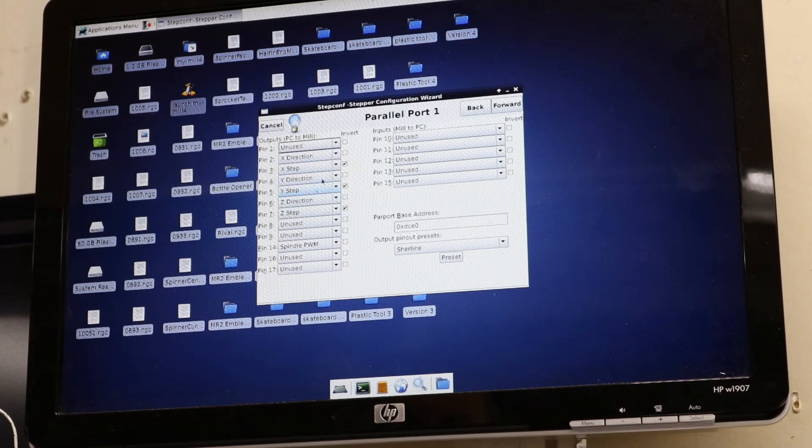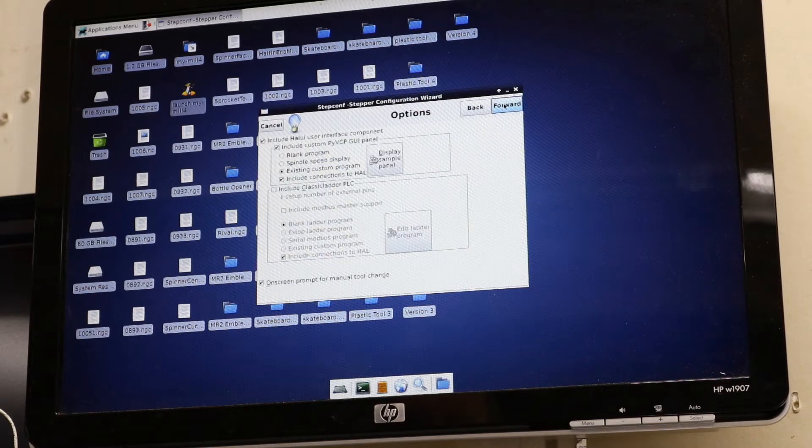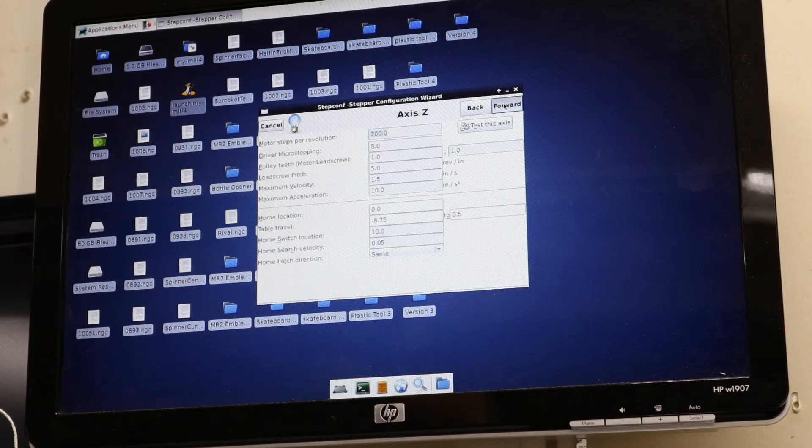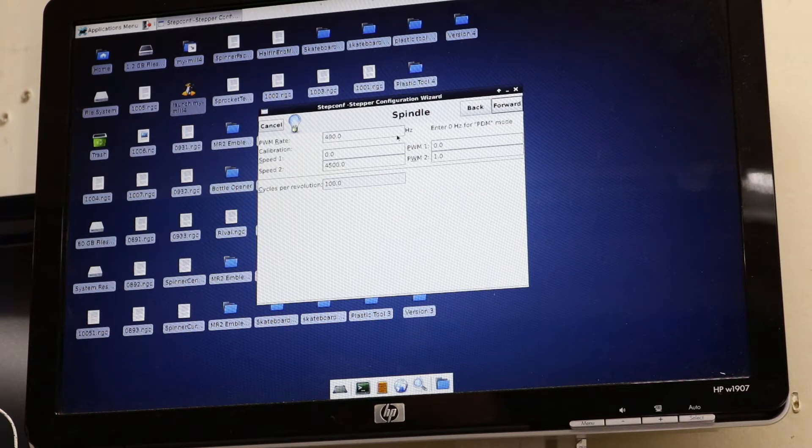So forward, this is my inputs. I've already got pin 14 as my spindle PWM, so that's good. And then what we care about is the spindle page that comes up after you select or assign a pin to be a spindle PWM. PWM rate, I did 490 because the board was working good with my Arduino as the input. And the Arduinos put out 490, so I left it there.